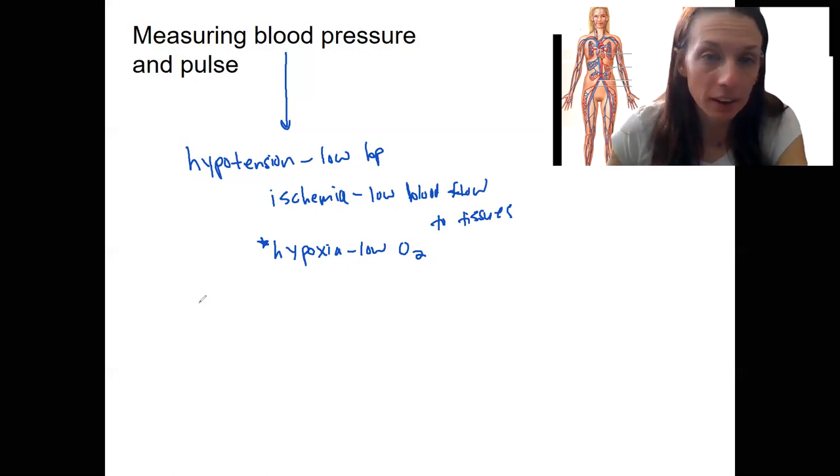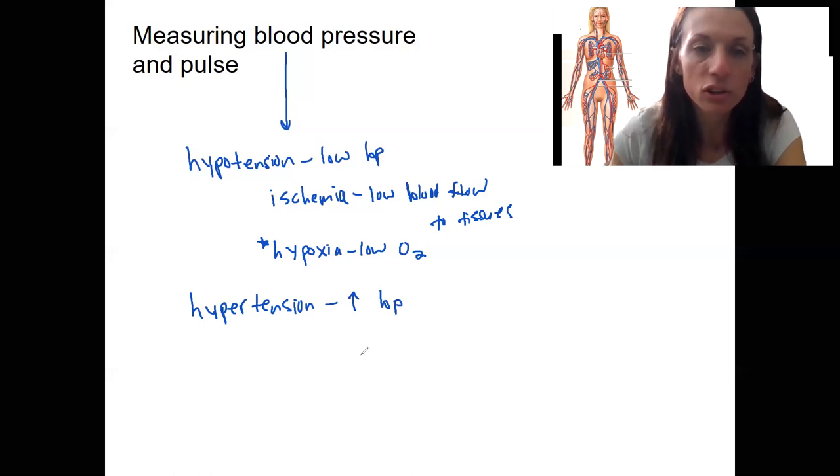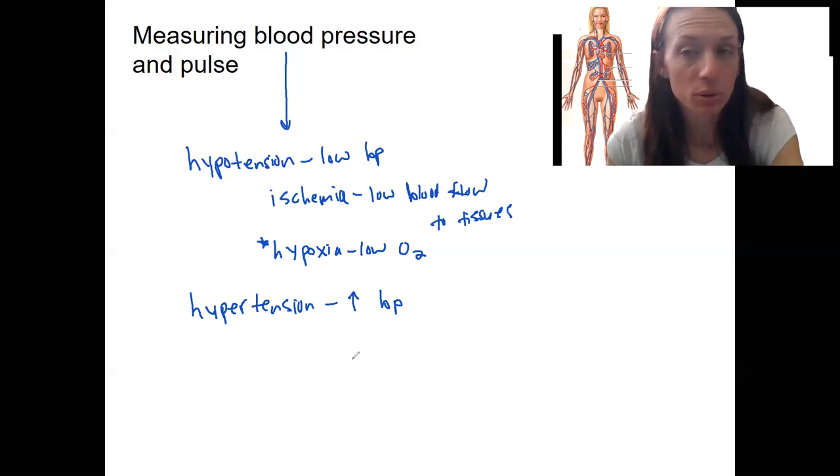On the flip side, we can have hypertension. So this is high blood pressure. This is a problem when it's chronic because it causes the heart to have to work a lot harder than it should have to, to combat that high blood pressure and the afterload in the aorta.